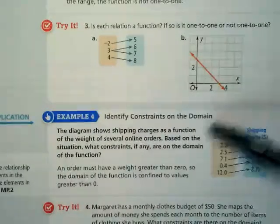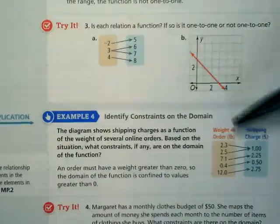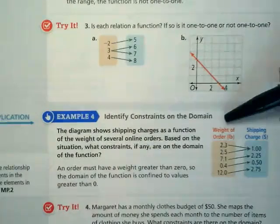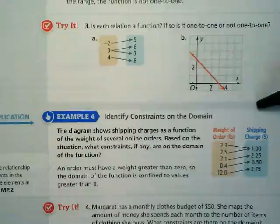So let's take a look at what the domain is. What are our X values here? What's the title? Weight of orders. And what is our Y value or our output?